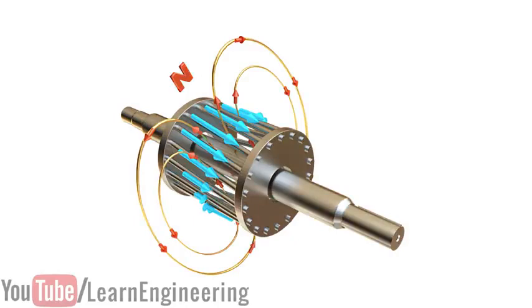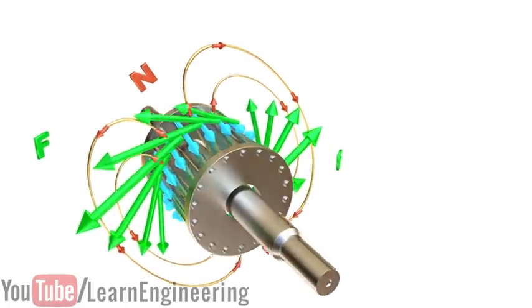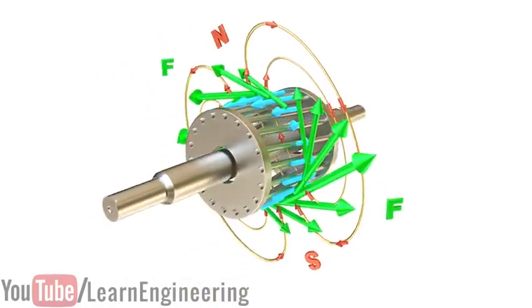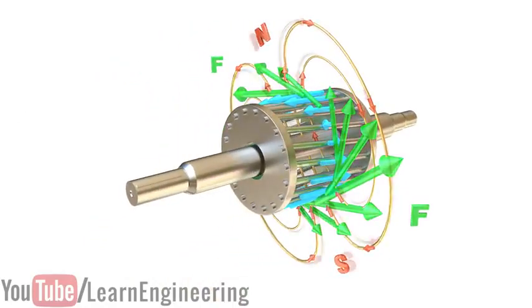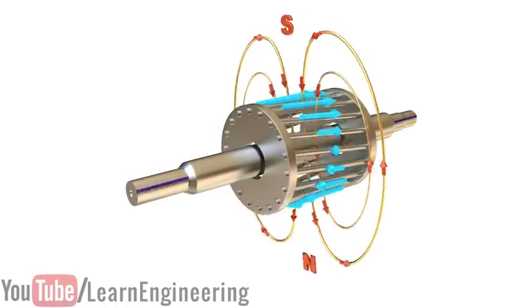According to Lorentz's law, when a current carrying conductor is placed in a magnetic field, it will experience force. You can see the force distribution on the different bars at a particular moment in time. These collective forces make the rotor turn.